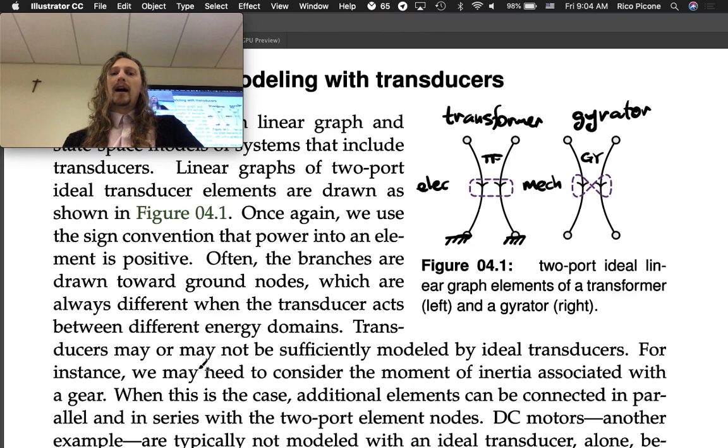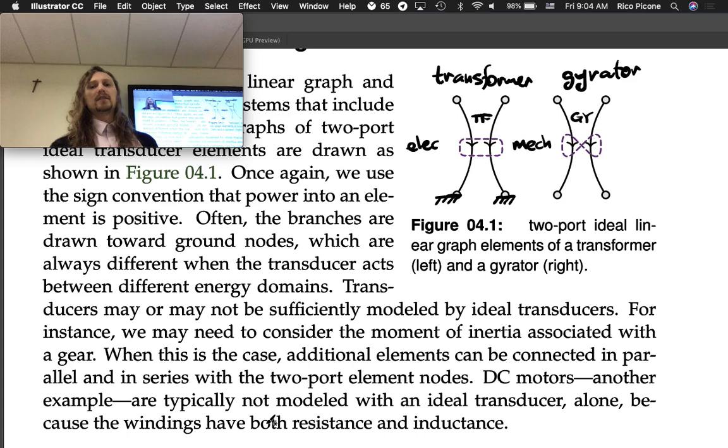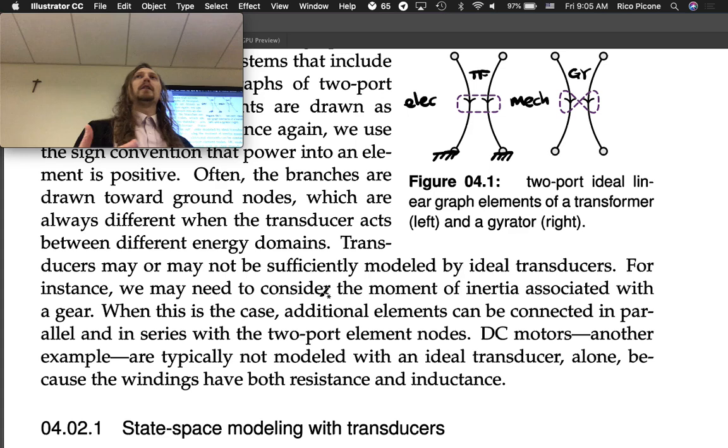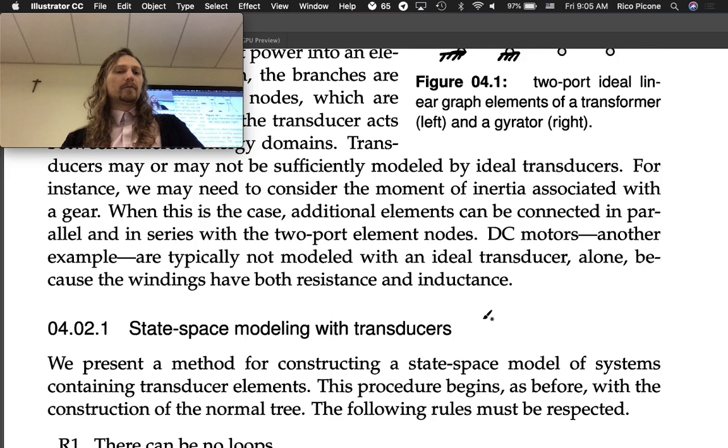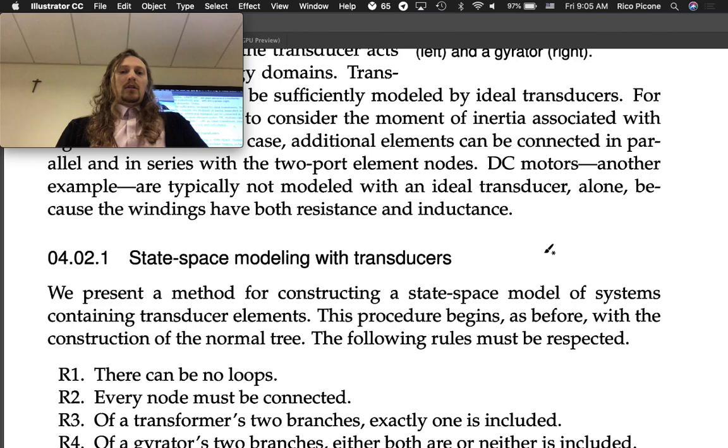Transducers may or may not be sufficiently modeled by ideal transducers. For instance, we may need to consider the moment of inertia associated with the gear. When this is the case, additional elements can be connected in parallel and series with the two-port elemental nodes. We'll see an example of this in the next lecture. DC motors, another example, are typically not modeled with an ideal transducer alone because the windings have both resistance and inductance. Additionally, the rotor has moment of inertia and the bearings have damping.